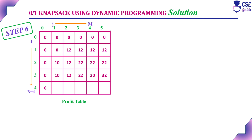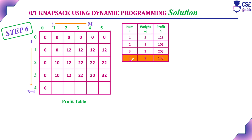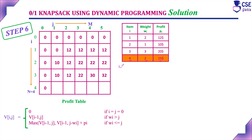Next is step 6. This is the table at the end of the fifth step. Now we are going to consider object 4 with weight 2 and profit 15, and this is the recurrence relation. We consider W_i and J, where the weight of the fourth object is 2 for all J values from 1 to 5. When the weight is greater than the remaining capacity, we use V(i-1, j); otherwise we use the max recurrence.